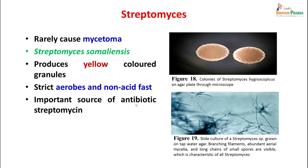Streptomyces rarely causes mycetoma; it is mostly Streptomyces somaliensis which causes infection, producing yellow-colored granules usually. They are strict aerobes and non-acid-fast, and they are important sources of antibiotics. They produce colonies which can be seen, and on slide culture, branching filaments with abundant aerial mycelia and long chains of spores are seen — which are very characteristic of streptomyces.